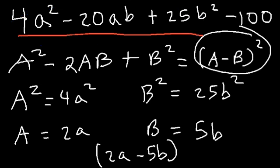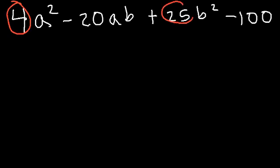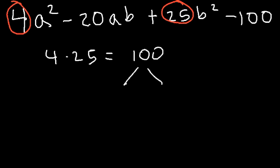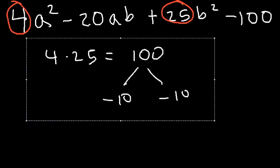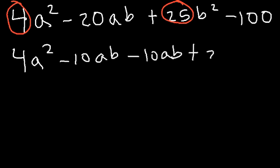If you don't have the formula, there's another way to get the same answer using factoring by grouping. Multiply 4 and 25 — that's 100. We need two numbers that multiply to 100 and add to negative 20: that's negative 10 and negative 10. So we split negative 20ab into negative 10ab and another negative 10ab.